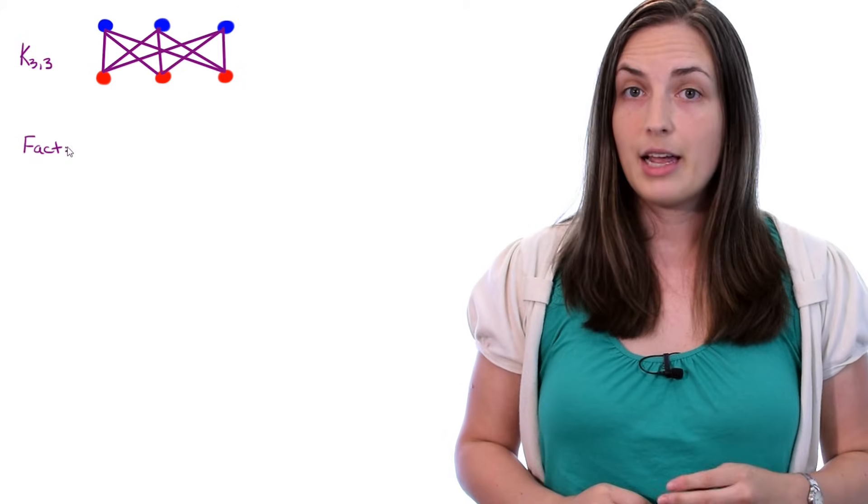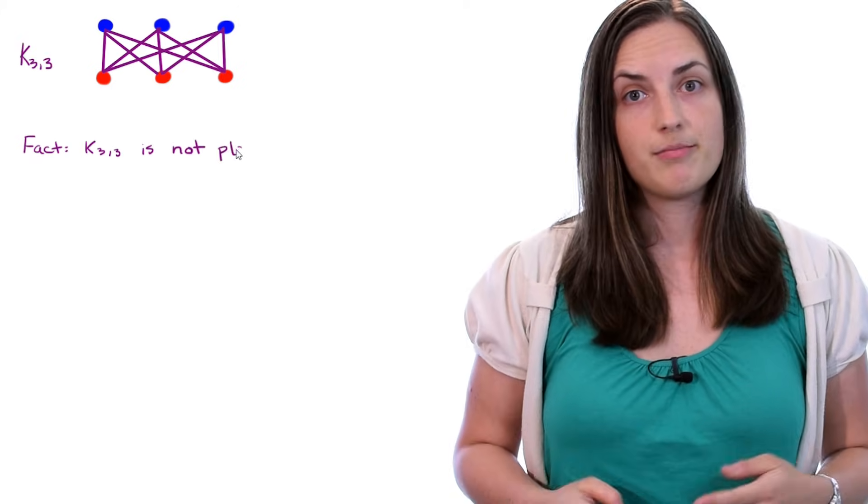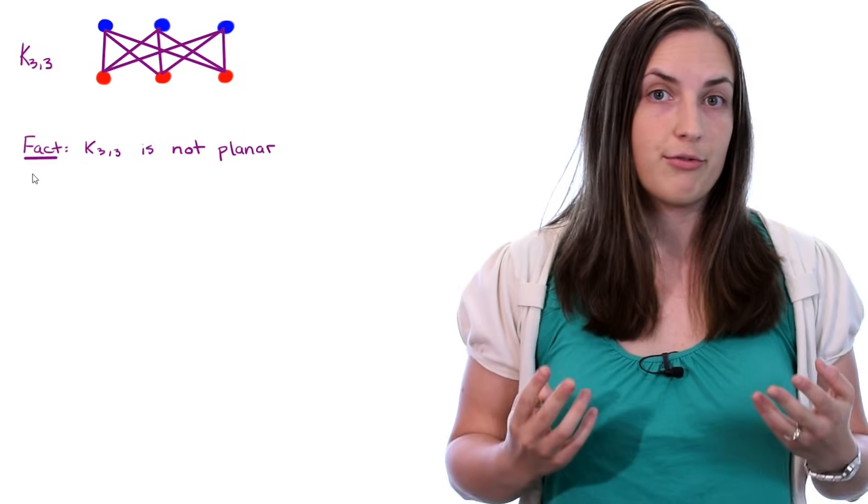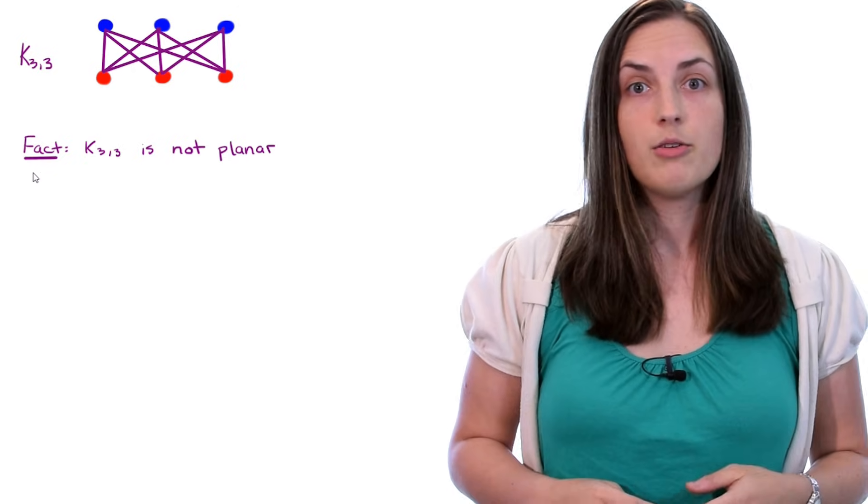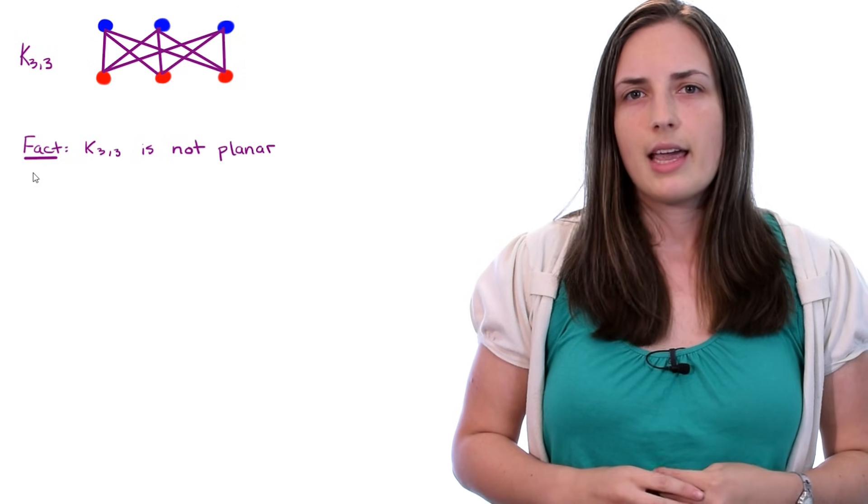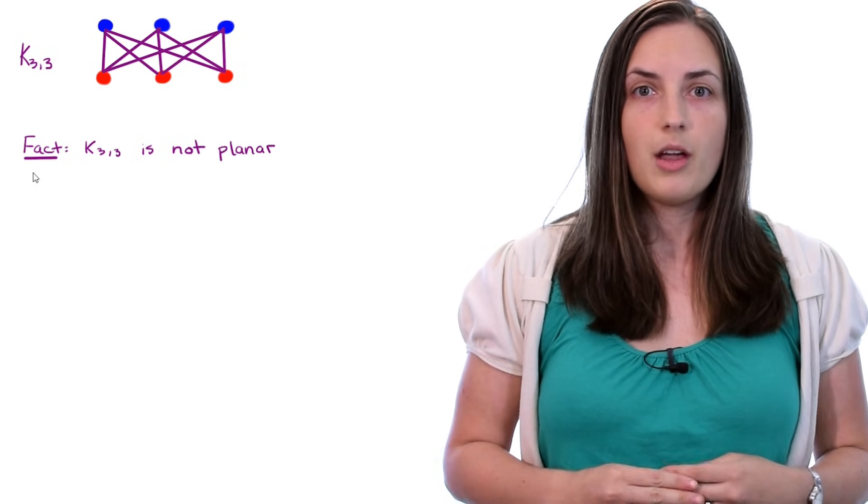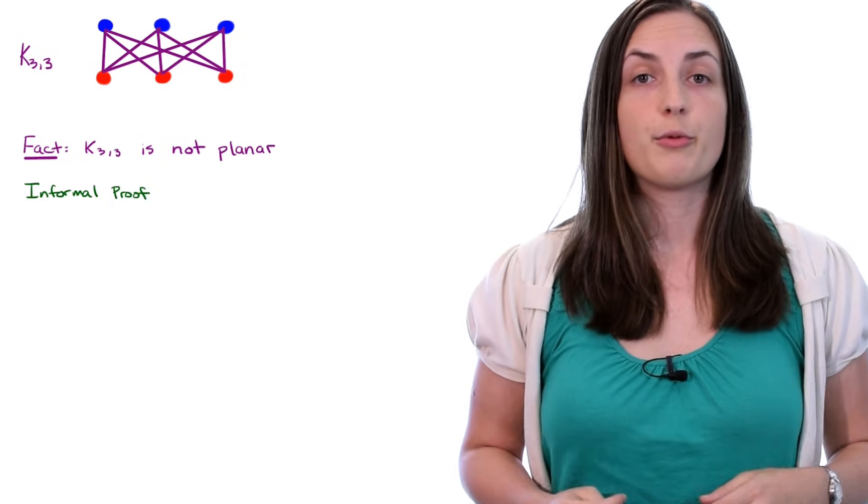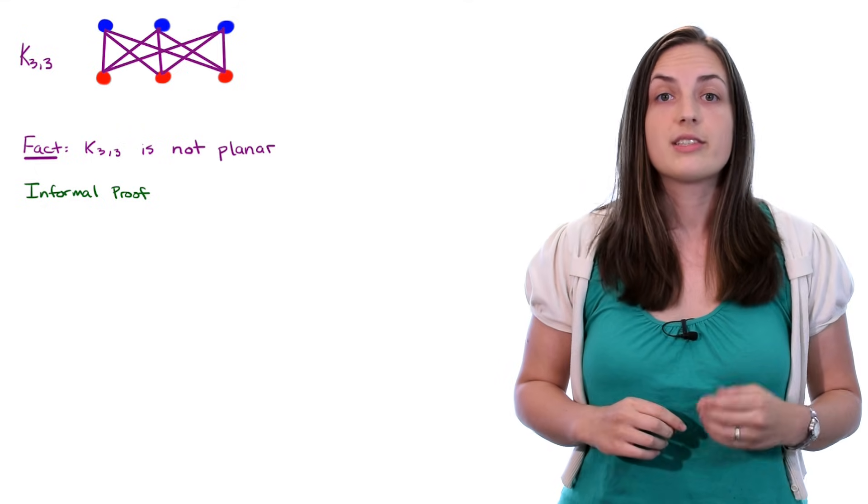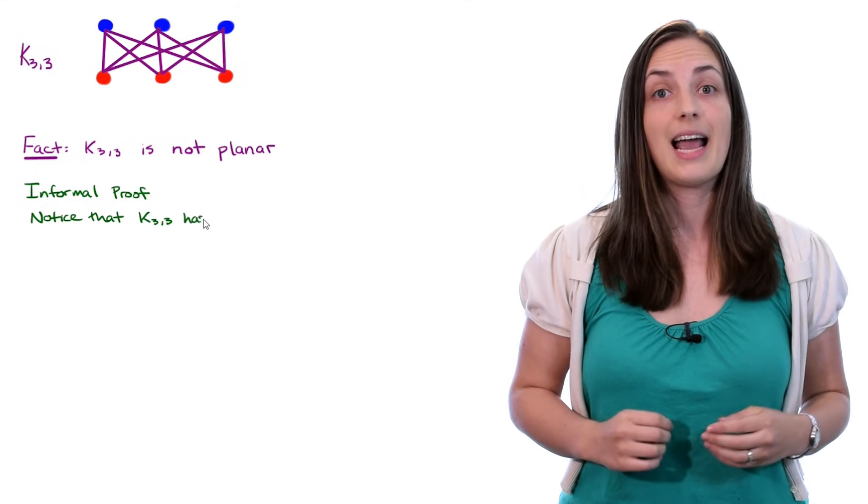And it turns out that K33 is not planar. So the takeaway is that not every graph can be drawn in a plane way. Now let's see why it is that K33 is not planar. We're going to just talk through an informal proof. First, we notice that K33 has a Hamilton cycle.